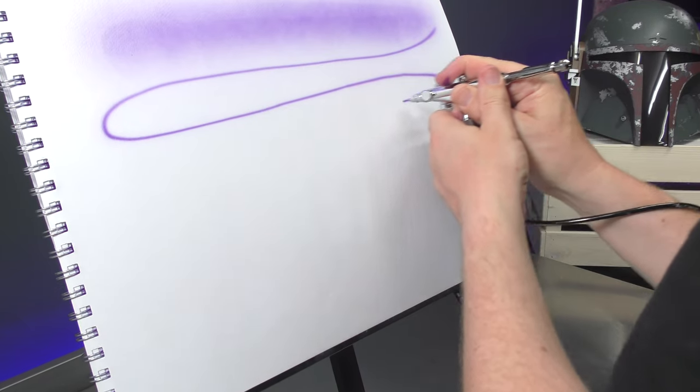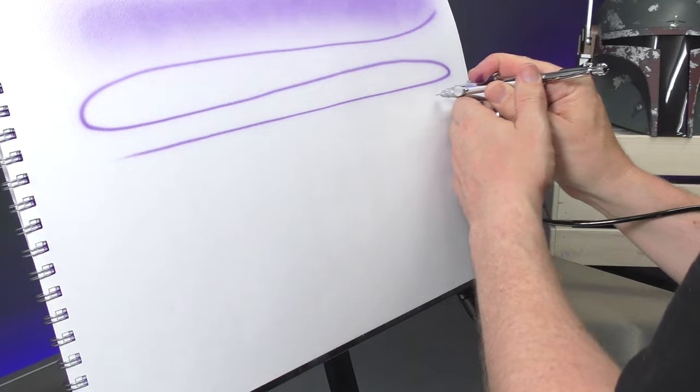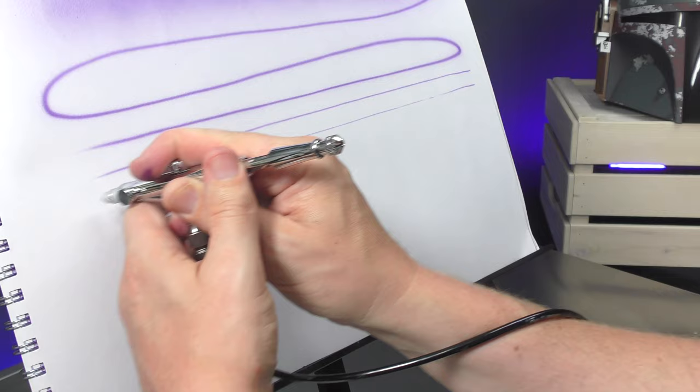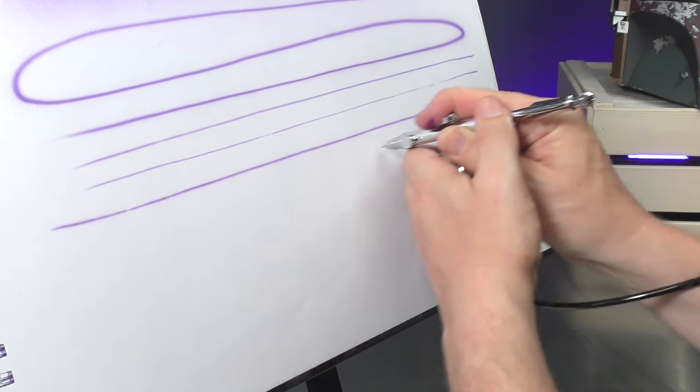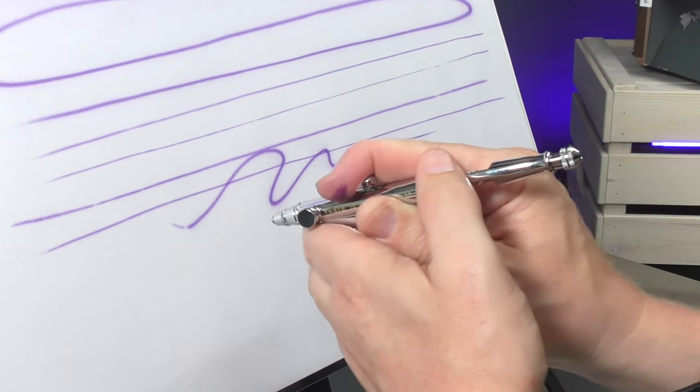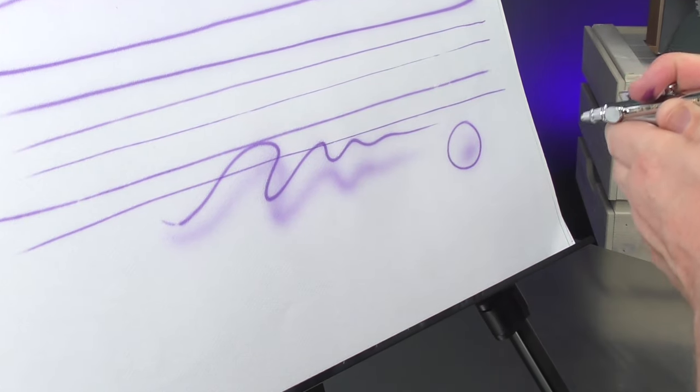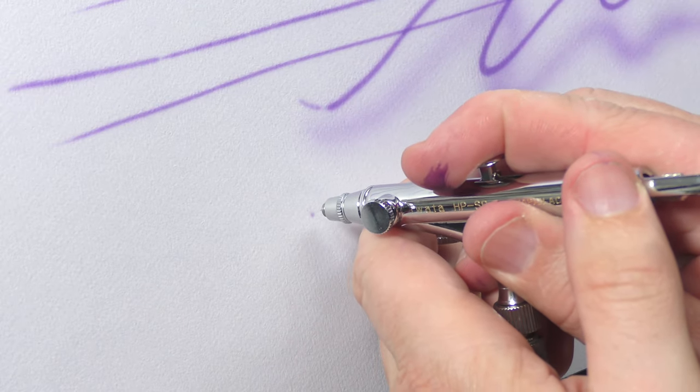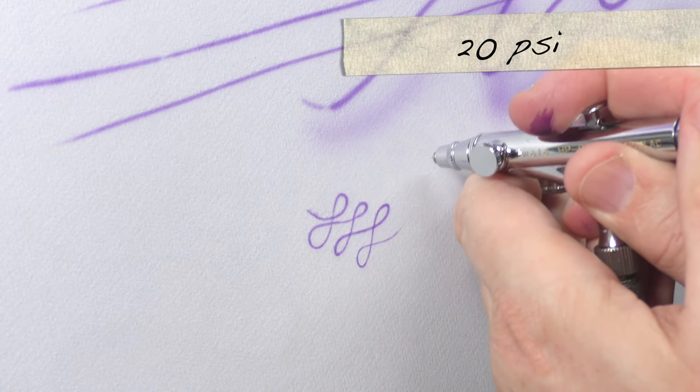Really consistent lines. If you want to go finer move up close and pull back a little bit, and then move a bit quicker through your stroke. Now this is straight out of the box, so I do like to wear in my airbrushes a little bit. And this one has an optimal working pressure of 15 to 25 psi, and I'm running at about 20 psi at the moment.